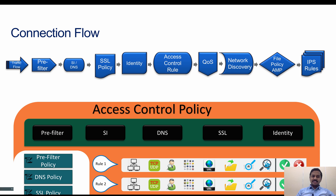If the connection is a DNS packet, then the DNS policy comes into effect. It intercepts the DNS traffic and, based on the DNS query, if it is a query to a domain which has a bad reputation, the traffic is dropped — just like security intelligence. If the request goes to a whitelist category, then the traffic is sent to the next component.